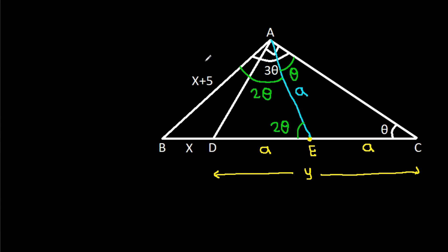Now, in triangle ABE, these two angles are equal at 2θ. That means AB will be equal to BE, and AB is x plus 5, and BE will be x plus a.